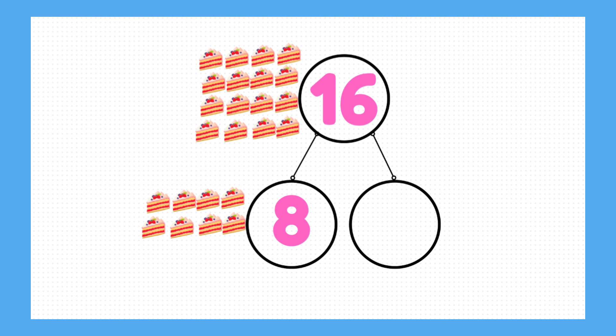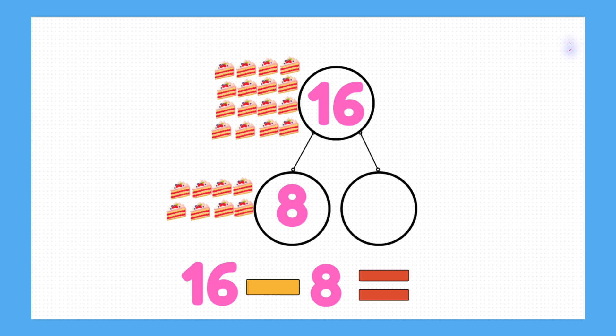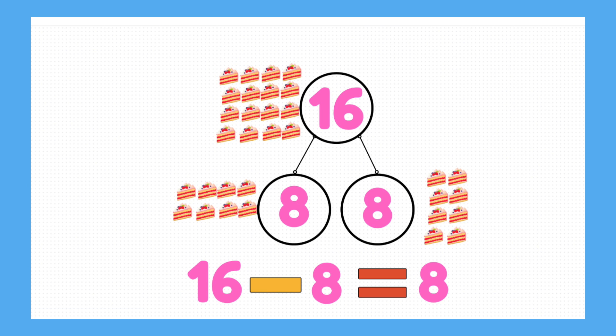Question number 3. A cake is divided into 16 slices. If 8 slices are eaten, how many slices are left over? Right, for this answer, the whole is made up of 16. We subtract 8 slices. The remainder should be 8 slices.